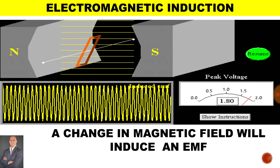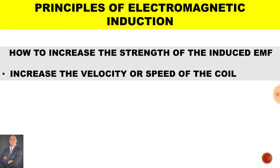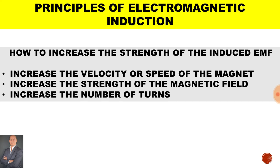A change in magnetic field will induce an EMF, and this can be indicated on our scale where there is a deflection indicating that an EMF has been induced. To increase the strength of the induced EMF, we can increase the velocity or speed of the coil, increase the strength of the magnetic field, or increase the number of turns.